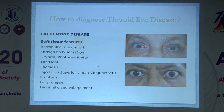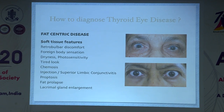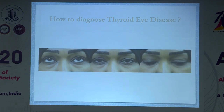Other manifestations may be non-specific, such as retrobulbar discomfort, foreign body sensation, dryness, tired look, and chemosis. Superior limbic conjunctivitis is one sign associated with thyroid eye disease. There may also be simple fat prolapse in the lower eyelid, especially in younger patients who more commonly have fat-centric disease.